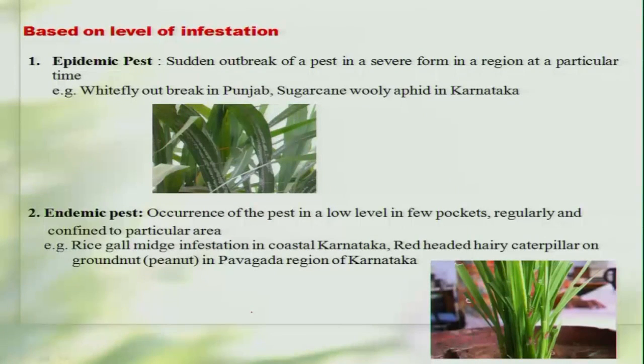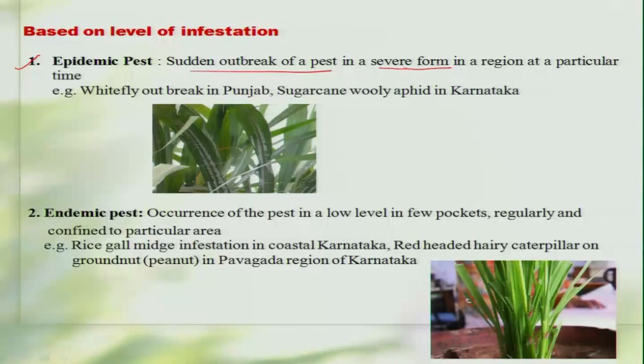Based on the level of infestation, pests can be classified as epidemic pests — there will be a sudden outbreak in quite a severe form over a larger area. A recent example is the whitefly outbreak in Punjab and Haryana, where this pest caused real havoc on cotton. Similarly, the sugarcane woolly aphid was quite epidemic some years back in Karnataka and Maharashtra.